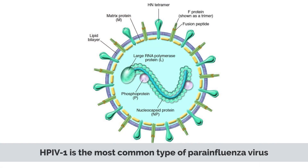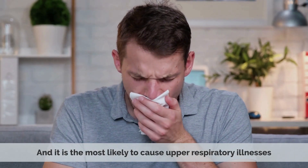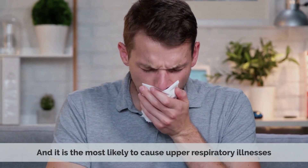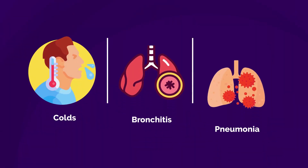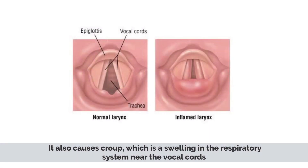HPIV1 is the most common type of parainfluenza virus, and it is the most likely to cause upper respiratory illnesses such as colds, bronchitis, and pneumonia. It also causes croup, which is a swelling of the respiratory system near the vocal cords.